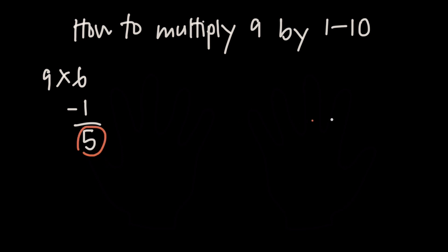Then we ask: what do we have to add back to 5 to get to 9? So 5 plus what equals 9? It's 4, because 5 plus 4 is 9. So 4 is our second number, which means 9 times 6 is 54.